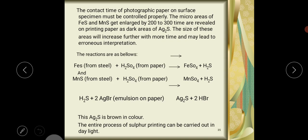The reactions are as follows: FeS from steel plus H2SO4 from paper, and MnS plus H2SO4. Special effects of sulfur printing can be carried out in daylight.